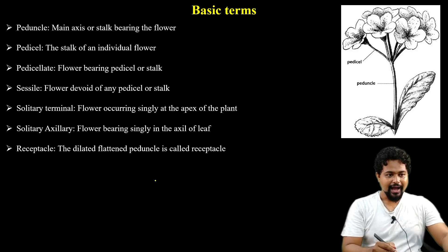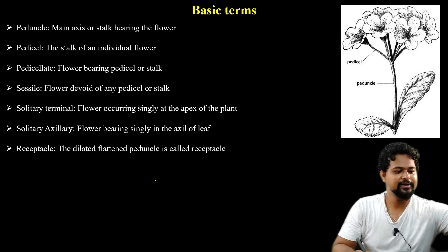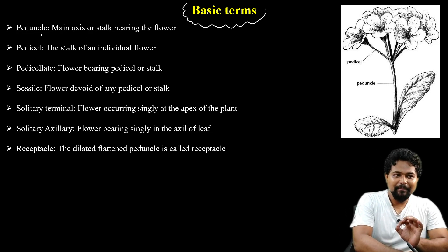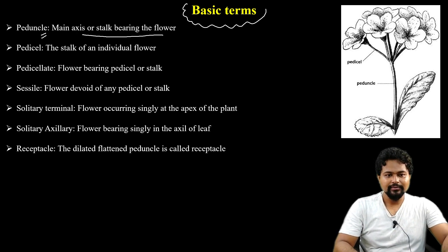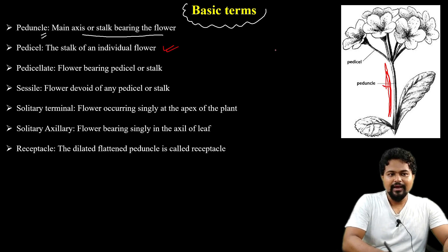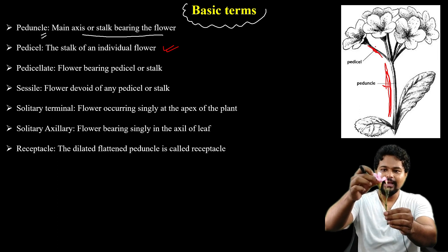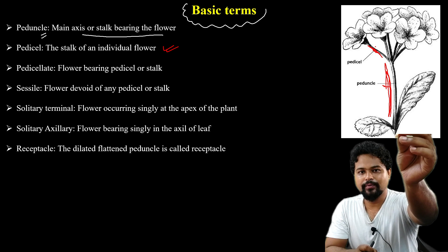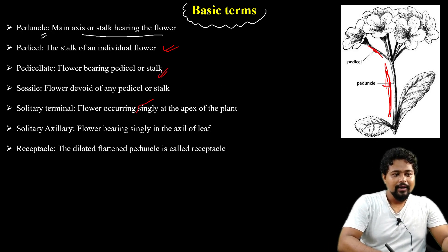Basic terms — peduncle: main axis or stock bearing the flower. This is the main axis. Pedicel: the individual flower-bearing stalk connecting the flower to the main axis.